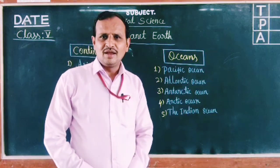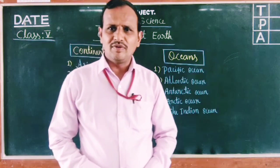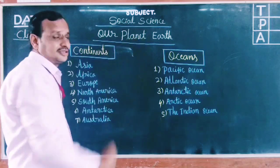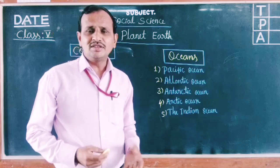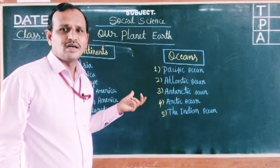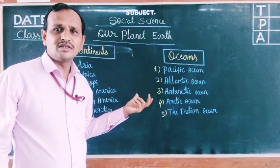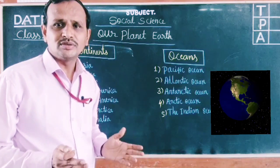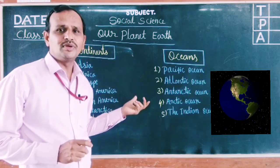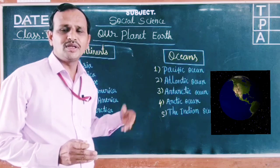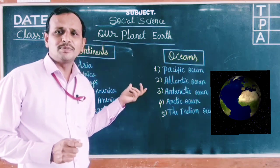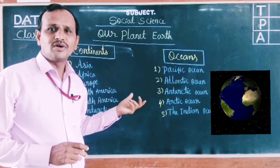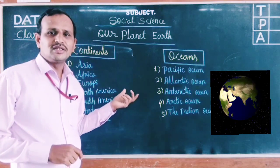Hi students, how are you? I once again welcome you all for Class Social Science Chapter 2, that is Our Planet Earth. In our last class we discussed how our Earth is so beautiful — due to the Earth having different landforms, it looks very beautiful and colourful. We also discussed that the Earth's shape is round, not flat.